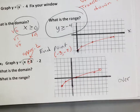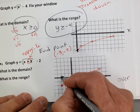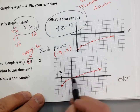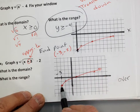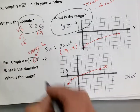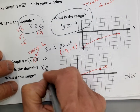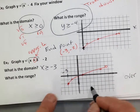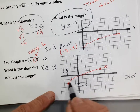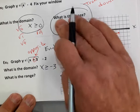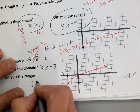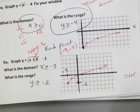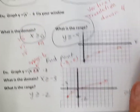Domain: the x values start at negative three and go forward, so the domain is x is greater than or equal to negative three. The y value starts at a height of negative two and goes up, so the range is y is greater than or equal to negative two. Those are the square root graphs' domain and range. In your homework you'll also do some stretching and we'll look at that in Zoom.